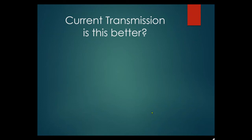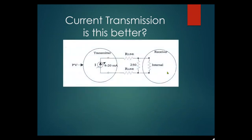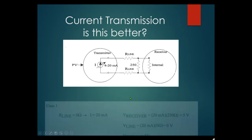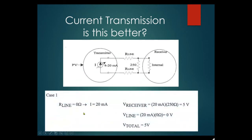Now let's talk about 4 to 20 milliamp current transmission. In the current loop diagram, there's a 250 ohm resistor and the voltage across it is 1 to 5 volts. Case one: R-line is zero ohms, current is 20mA. Voltage across receiver: 20mA × 250Ω = 5 volts. Voltage across line: 20mA × 0 = 0 volts. Total is 5 volts — exactly what we want.